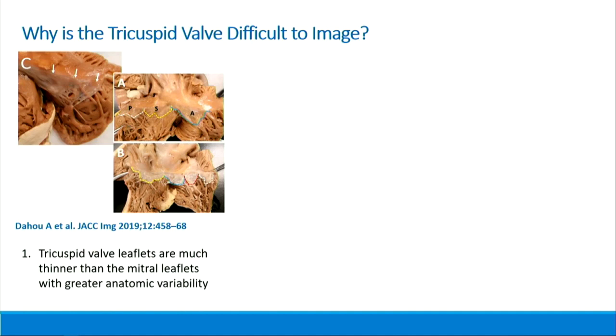So why is tricuspid valve imaging difficult? The tricuspid valve itself is just different from the mitral. The leaflets are very, very thin — you can see through them. If you go to the pathology suite, you can literally lift them up and see underneath. They have a much greater variability than the mitral valve, so you can have three leaflets, as in panel A, or you can have four or five. Some pathologic studies suggest that only 67% of patients actually have three definable leaflets.